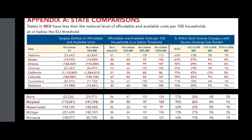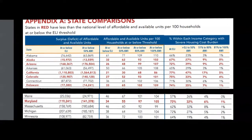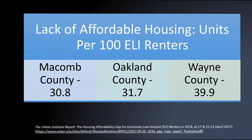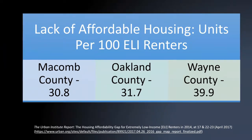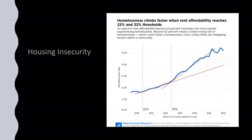An Urban Institute report showed a lack of affordable housing units locally — in Macomb County there are only 30.8 units per 100 ELI families, 31.7 for Oakland County, and 39.9 within Wayne County — still very low. And homelessness climbs at key thresholds: when rent affordability reaches a 22% threshold and a 32% threshold, the likelihood of homelessness really starts to increase. It's a problem.